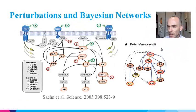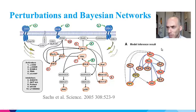Reverse engineering the topology of regulatory molecular biological networks can be done through the analysis of a set of perturbations. Karen Sachs et al. reverse-engineered the hierarchy of a cell signaling network using multiple perturbations and a statistical method called Bayesian network inference.